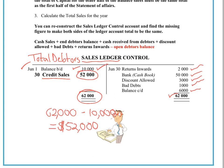Incidentally, you could also work in reverse: if you knew the credit sales and were missing how much your debtors had paid you, but you knew the returns, discounts, bad debts, and the balance at the end of the month, you could find that missing piece of information. As long as it's only one part of the equation that's missing, it can be calculated using the sales ledger control account.